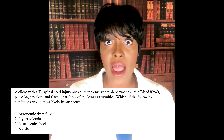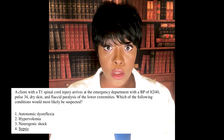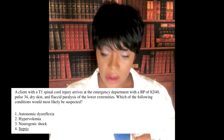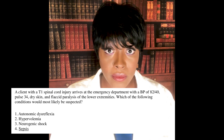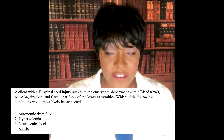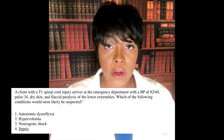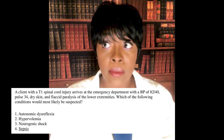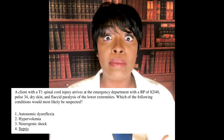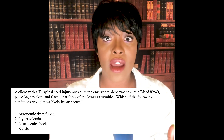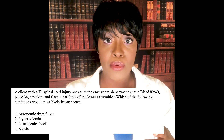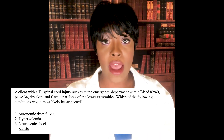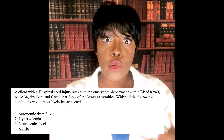The correct answer is neurogenic shock. Let's go through the clues: blood pressure of 82 over 40 — this patient is hypotensive. Pulse of 34 — very slow. Skin is dry. And there's flaccid paralysis — a CNS issue. In neurogenic shock, the sympathetic nervous system isn't working. Remember, the SNS speeds everything up — increases heart rate and blood pressure. When it's not working, that heart rate and blood pressure go down, and you see those CNS issues like flaccid paralysis.